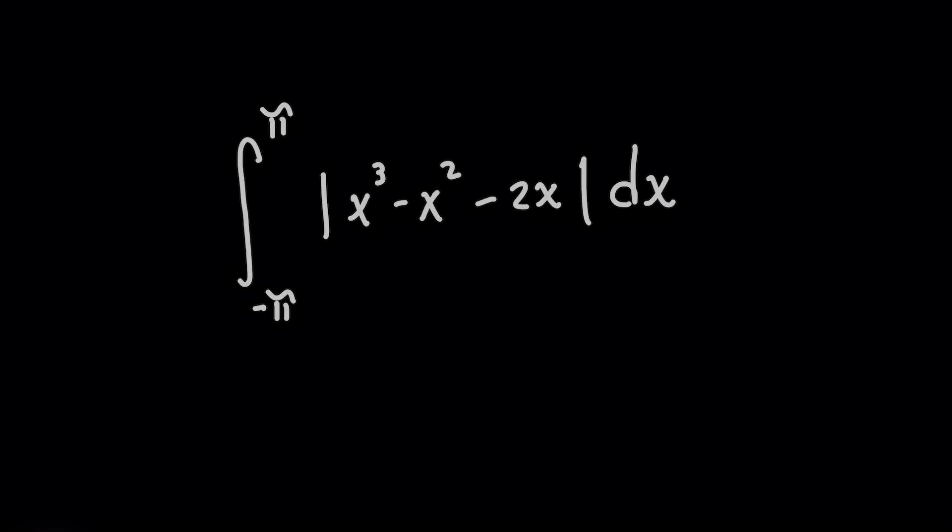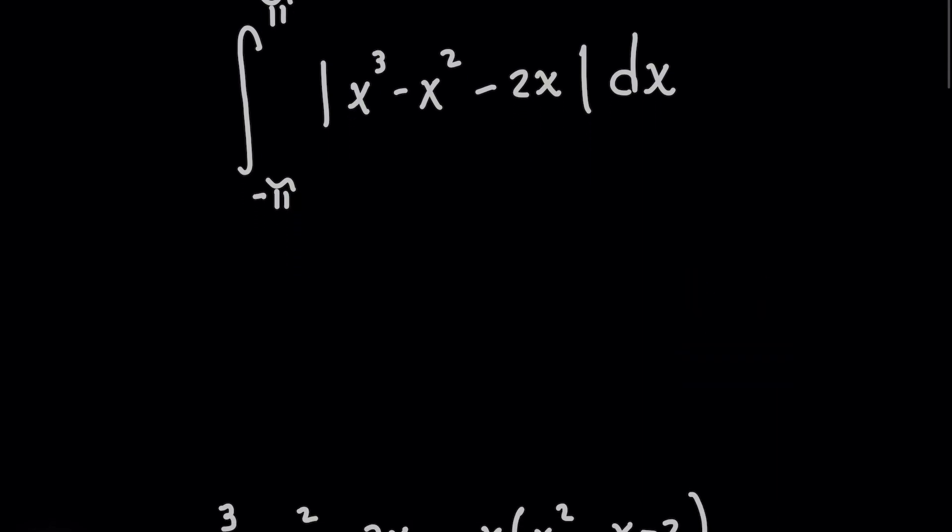Did you catch the tricky trap here with this absolute value? For this interval negative pi to pi, remember that with a definite integral, we're adding the areas under the curve. But the problem is that on that interval, if this original function was ever negative, and now you are making it positive with the absolute value, and you add all the areas as if everything was above the x-axis, you're gonna get this wrong on your exam.